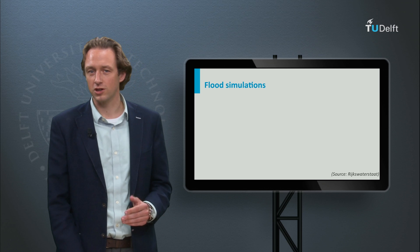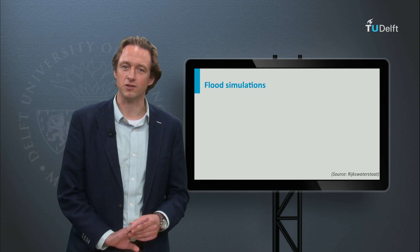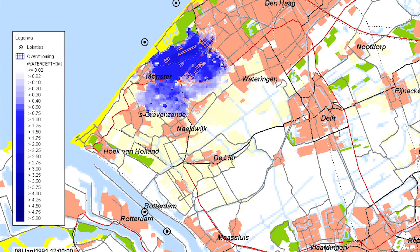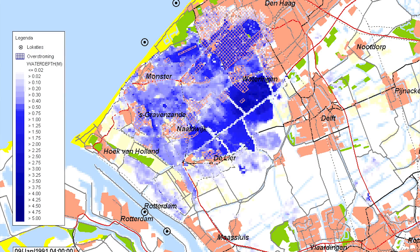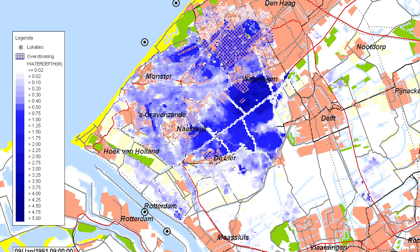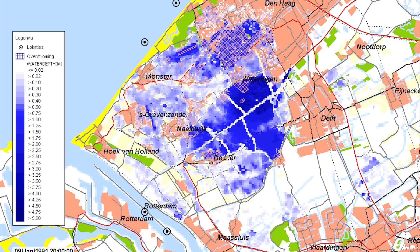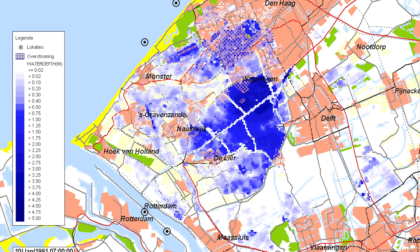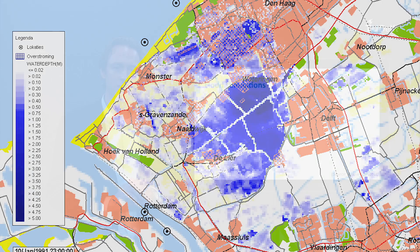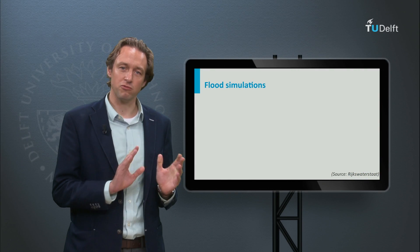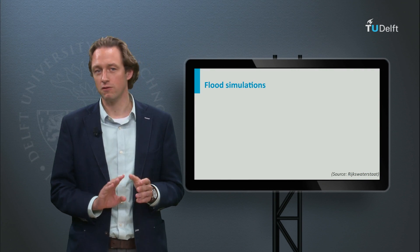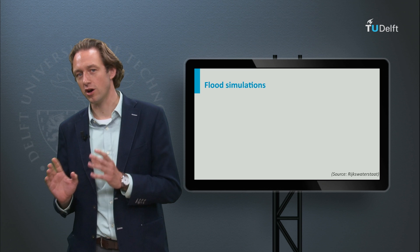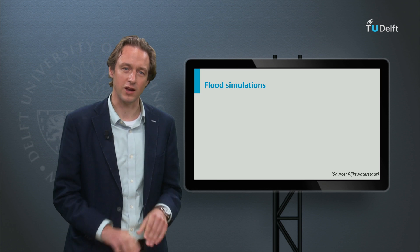Computer models can show us how areas will flood. Here you see a simulation for coastal flooding of South Holland. The flood pattern depends on the location and the amount of water inflow, the topography, and elevation of the area. Some floods can lead to rapid, deep, and dangerous flooding, whereas others take several days to develop.